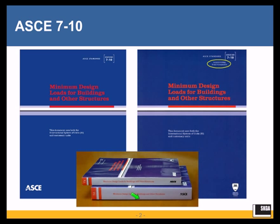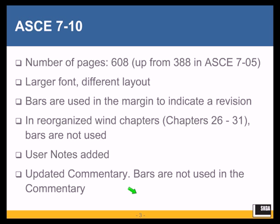This is ASCE 7-10, and this is ASCE 7-05. Obviously much thicker — ASCE 7-10. Why is that? Let's take a non-technical view of what's different between the two, helping you understand why the number of pages has gone up to 608 from 388 in ASCE 7-05. Part of that can be explained by new provisions, part by a longer commentary, and part by larger font.